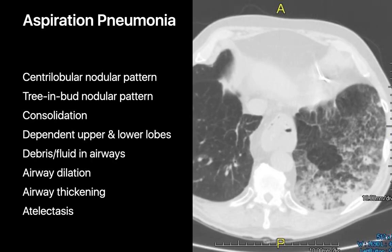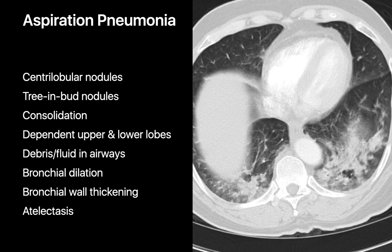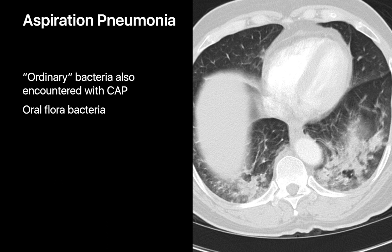The imaging features of aspiration pneumonia usually include a centrilobular nodular pattern, tree-and-bud nodular pattern, and consolidation, distributed in the dependent regions of the lungs. Airways are often abnormal — they can appear dilated, with thickened walls, and often contain fluid or mucoid impactions. Since aspiration of gastric acid can lead to adhesive atelectasis, it's not unusual to observe partial volume loss in opacified regions, or even parenchymal bands or wedge-shaped lung opacities. The pathogens cultured are not always oral flora; strep pneumo, for example, could also be a culprit.